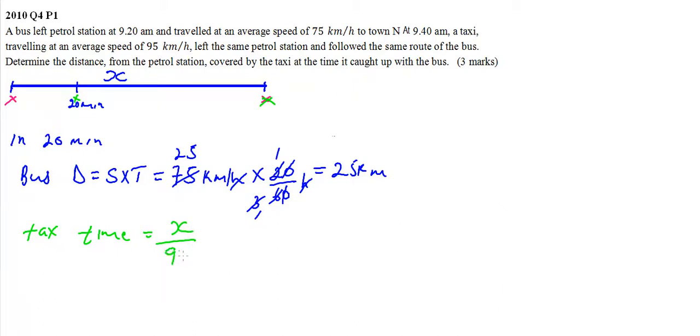For the bus, since it had covered 25 kilometers, the time is the total distance minus 25 kilometers divided by the speed, which is 75. If you equate these two times, they are the same.